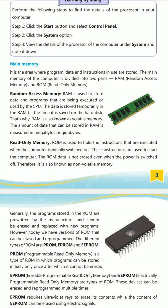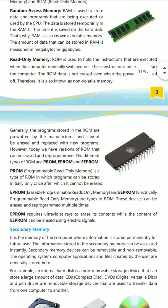The next part is ROM — Read Only Memory. It holds the instructions that are executed when the computer is switched on. These instructions are used to start the computer, and ROM data is not erased when the power is switched off. Therefore, it is also known as non-volatile memory. This memory is pre-installed by the manufacturer and is used to start the computer. The programs stored in ROM are pre-written by manufacturers.